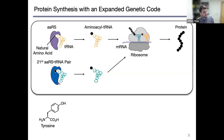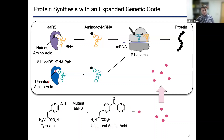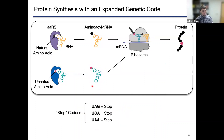These transplanted enzymes and tRNA can function in the cell and participate in translation. Because this is a naturally occurring aminoacyl tRNA synthetase, it's going to recognize one of the natural amino acids such as tyrosine. In our field, we use rational design and directed evolution to modify these transplanted enzymes such that they no longer recognize their native substrates and will instead recognize an unnatural amino acid. If we provide this unnatural amino acid into the growth media of cells expressing the modified aminoacyl tRNA synthetase, the enzyme will attach this amino acid onto its cognate tRNA.